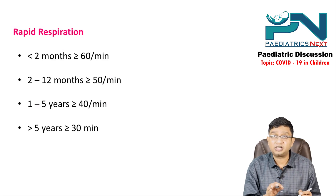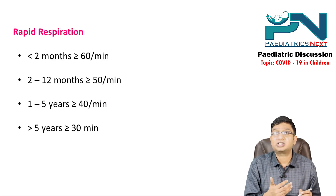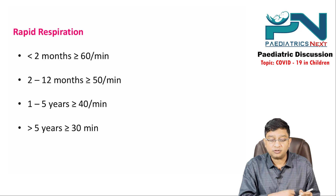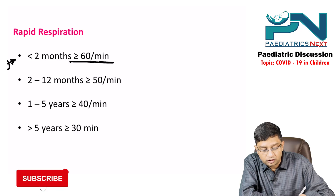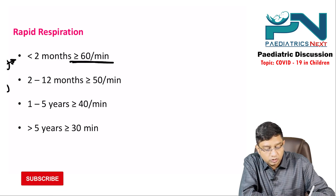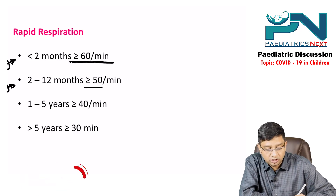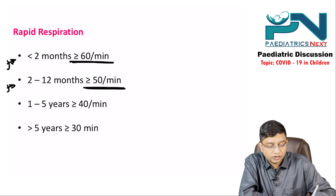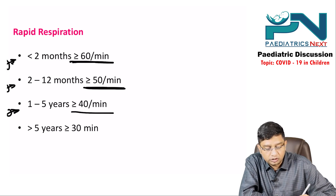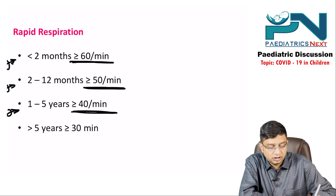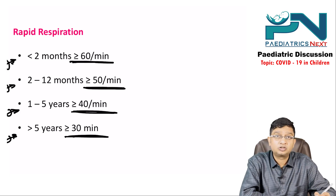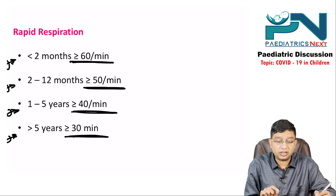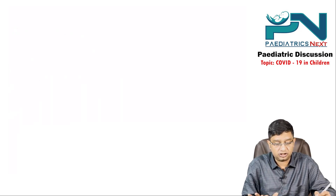The definition of rapid respiration follows the same guidelines used for pneumonia: less than 2 months — ≥60 per minute; 2 to 12 months — ≥50 per minute; 1 to 5 years — ≥40 per minute.